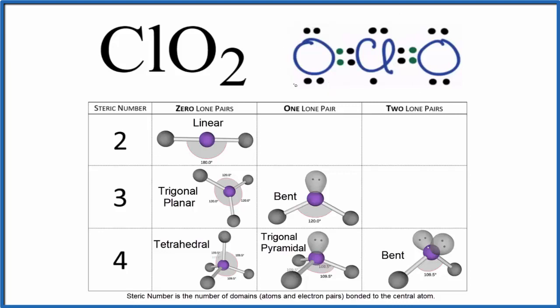If you need help drawing the Lewis structure, there's a link in the description of this video. You will note that we do have a single electron here in our Lewis structure. We're going to treat that as a pair of electrons when we look at the molecular geometry. We'll look at this from the perspective of the central atom, this chlorine atom here.